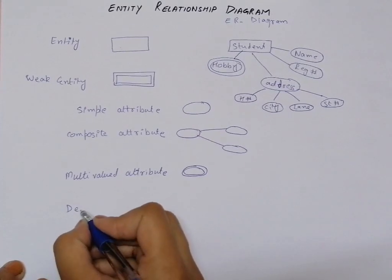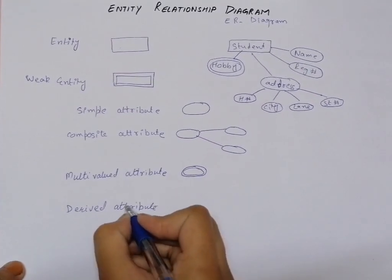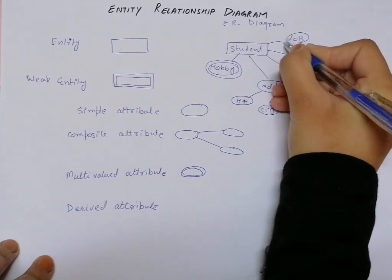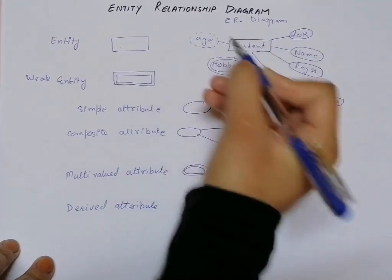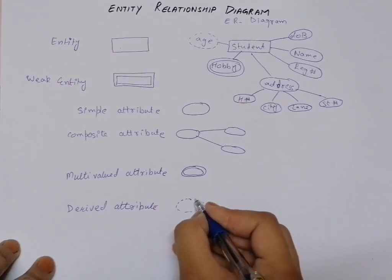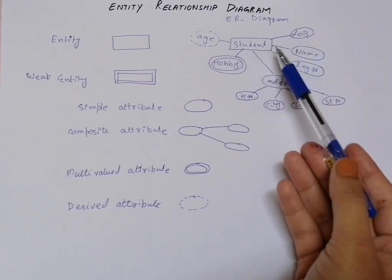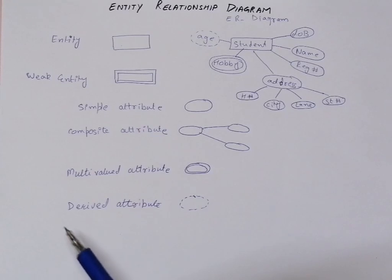The last type of attribute is a derived attribute. As the name suggests, these are attributes derived from some other attribute. For example, if a student enters their date of birth, we can calculate age from it — so age becomes a derived attribute. Derived attributes are represented by a dotted oval. Since we can calculate age from date of birth, we don't need to explicitly ask the student to enter their age.